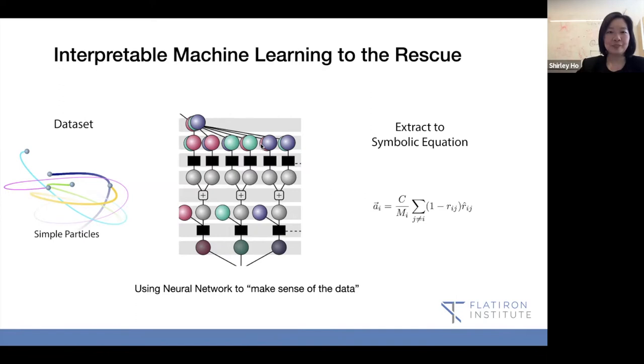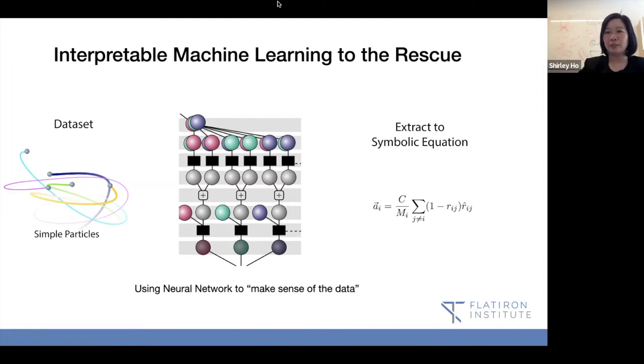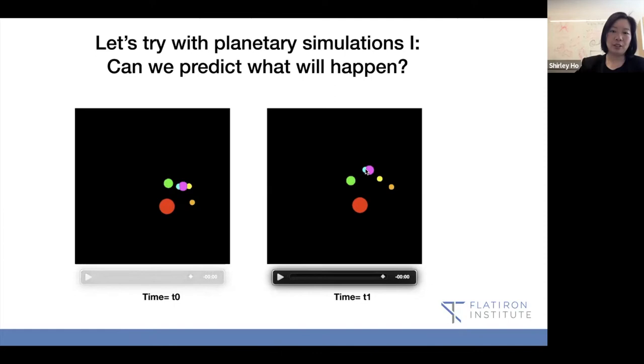Let's try with planetary simulations and see. This is the dataset we're going to show to some neural network. Time t equals zero, some planets moved around, t equals two, time t equals t one, it moves the next step. So can we predict what happened?